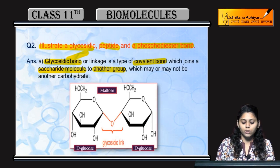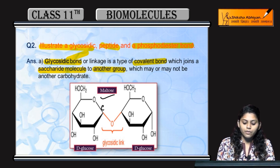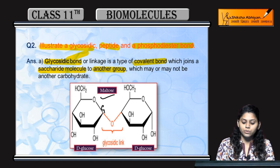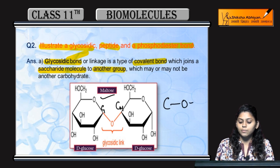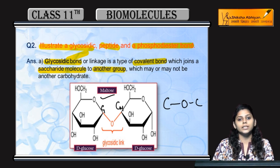और जो glycosidic bond था, उसमें maltose का example दिया है। Carbon 1 एक glucose की और Carbon 4 दूसरे glucose की। जब C-O-C bond बनाते हैं, इसे glycosidic bond बोलते हैं। तो ये था glycosidic, peptide और phosphodiester bonds।